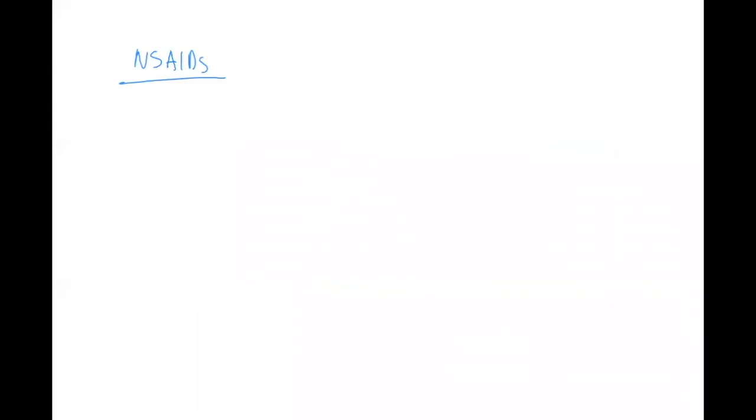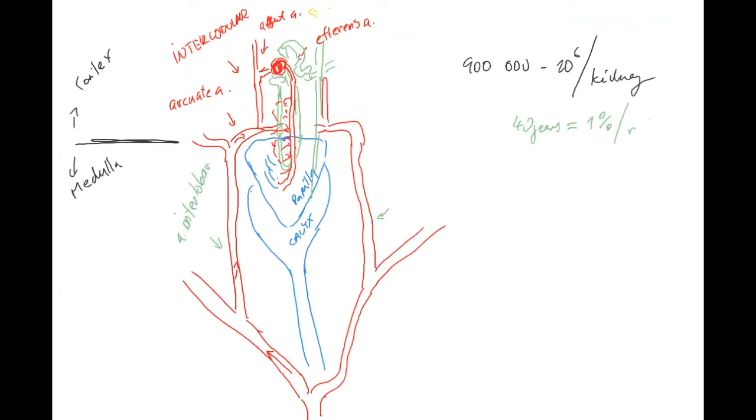I'm going to go back. Always remember that prostaglandins are the ones which are vasodilating the afferent arteriole. And that is why if you block the prostaglandins, you're going to cause vasoconstriction. And what does this mean over here? This means that you will cause the whole glomerulus and the rest of the medulla ischemic.